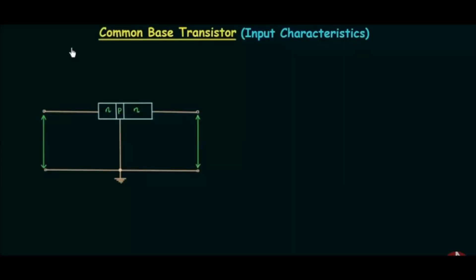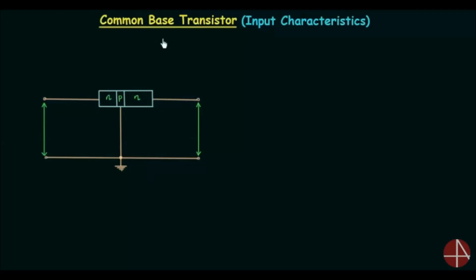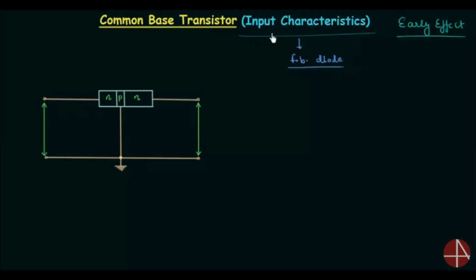In the previous lecture I explained the common base configuration of the transistor. Now I will explain the Early effect, and using this we will plot the input characteristics of the common base transistor. The input characteristics is simply the characteristics of a forward biased diode. It is the graphical relation between the input current and the input voltage for different output voltages.